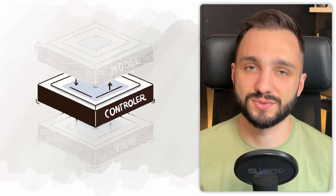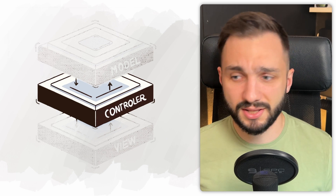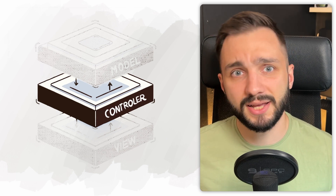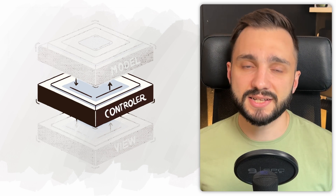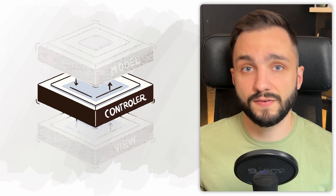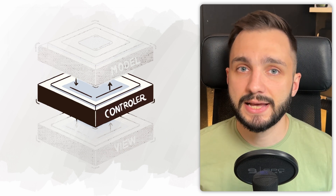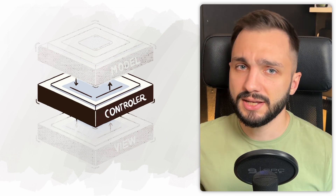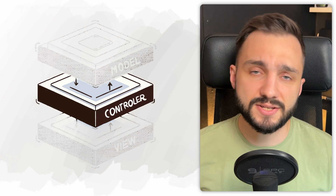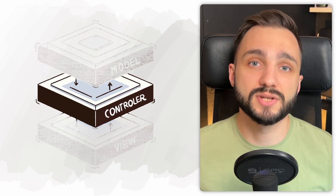The third part is the controller. It represents a bridge between the view and the application business logic. It accepts requests from the view, verifies them, and talks with the model through its interface to change the application state. It performs actions or gets the necessary data and sends the received results back to the view. We will explore more examples later.